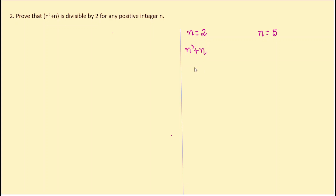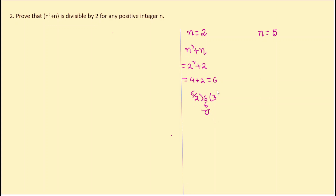For n = 2: n² + n = 4 + 2 = 6. Dividing 6 by 2 gives remainder 0, so 6 is an even number — it is divisible by 2.